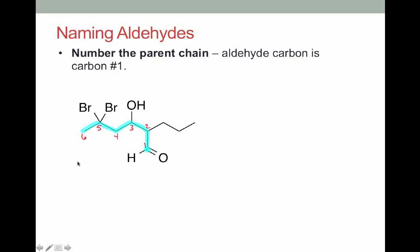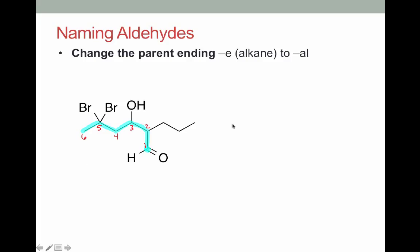We end up with a six-carbon parent. The next thing we need to do is come up with the actual parent name, and six carbons is hexane. We're going to drop the E from the alkane name and change that to AL, so that'll be hexanal. We don't need to specify 1-hexanal because since aldehydes are always terminal, they'll always be carbon one.